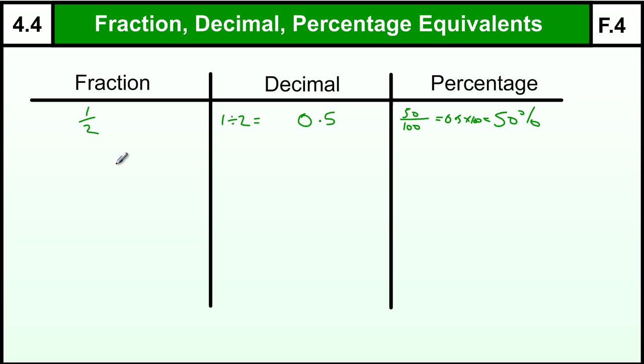Other things that we should know: we should know that a quarter is 0.25 and therefore 25%. That's the second most common one. We should know three quarters is 0.75, or 75%.